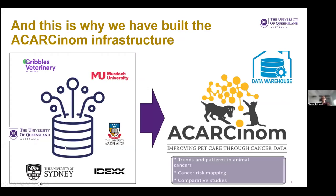The A-carcinome platform is collecting data from veterinary pathology labs within four academic institutions — Murdoch, UQ, Adelaide, and Sydney — and two commercial veterinary pathology labs, IDEXX and Gribbles. Data are transferred into the A-carcinome data warehouse, where they can be used to analyze trends of cancers, look at geographic distribution, identify potential environmental risk factors, or conduct comparative studies on shared risk factors between human and animal cancers.